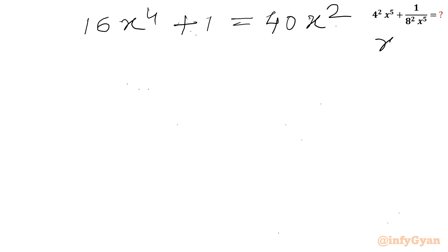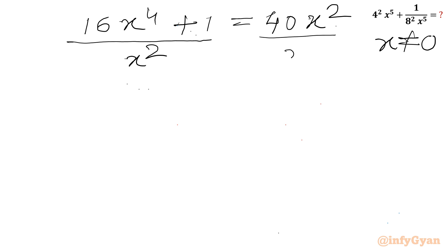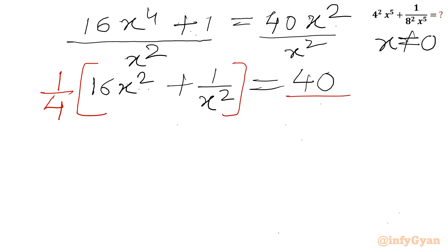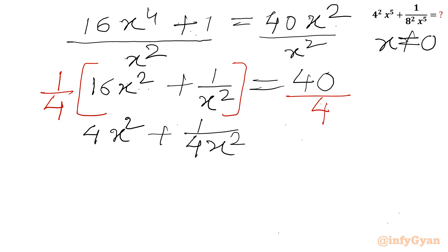Now x is non-zero — since x = (√3 − √2) over 2 — so I can divide both sides by x². So I can write 16x² + 1 over x² equal to 40. Now I will divide this equation by 4 once again. So LHS becomes 4x² + 1 over 4x² equal to 10.